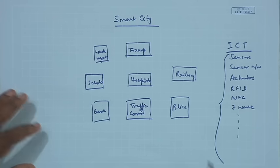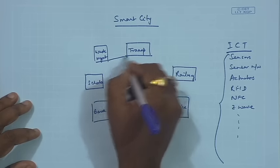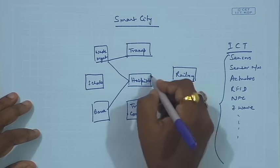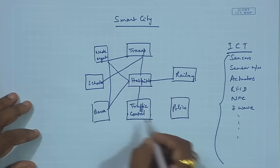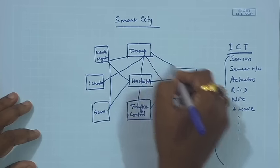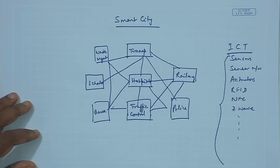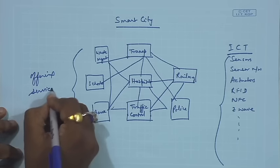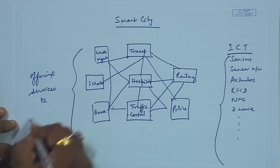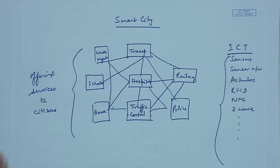In an IoT environment, there has to be a lot of interconnectivities between all these different blocks. There has to be connectivity between all these different types of blocks for different good reasons, and the reasons could be like offering different services to citizens. In a smart way, people would be able to do different things — for example, if it is a healthcare facility, very easily if something goes wrong with a school child during school hours, the hospital can be contacted.